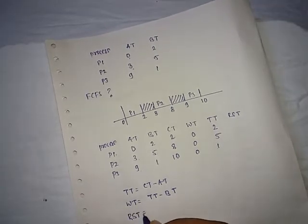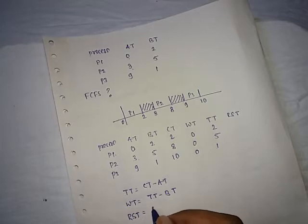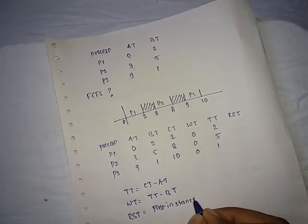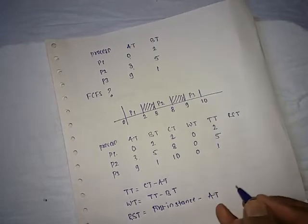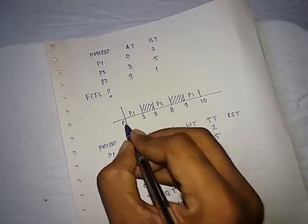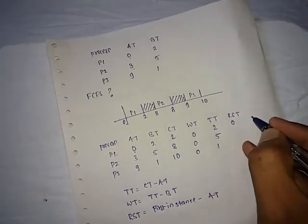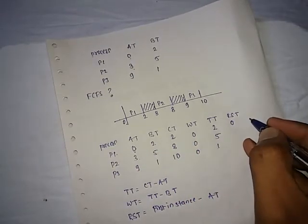Now, the response time. You know the formula response time: first instance minus arrival time. So, first instance for P1 process is 0, arrival time of P1 process is 0, that means 0 minus 0, response time for the process P1 is 0.